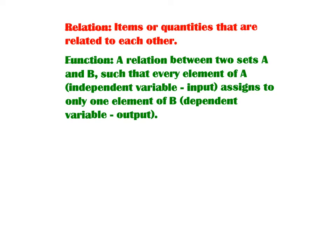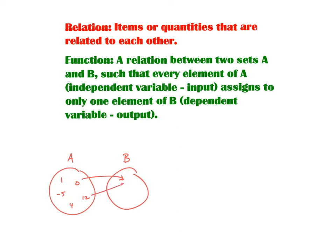So first I'd like to get started with the idea of a relation as opposed to a function. A relation, by definition, is items or quantities that are related to each other. Let's say we have a set A and another set B. Set A is considered the independent variable, set B the dependent variable. All the values within A map to values in B — maybe two of them go to the same one, or one goes to two different values. It doesn't really matter. This is a relation. Items from one set are related to the other set. In a relation, it doesn't matter how many times a point in input set A goes to a different value — it could go to ten different values and still be a relation.